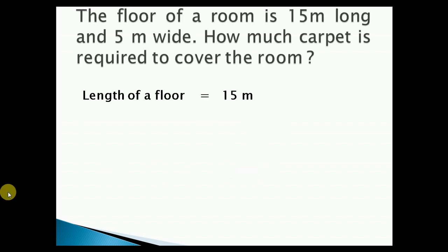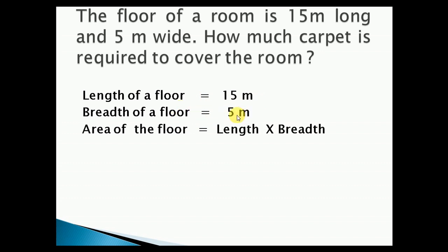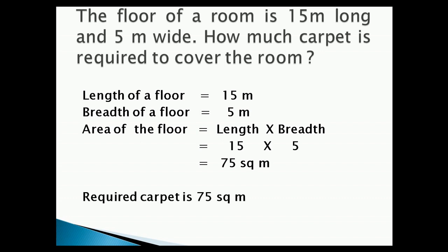Now we will solve problem sums on the basis of area and perimeter. The floor of a room is 15 meters long and 5 meters wide. How much carpet is required to cover the room? Length of the floor equals 15 meters, breadth equals 5 meters. Area of the floor equals length into breadth equals 15 into 5 equals 75 square meters. Therefore, the required carpet is 75 square meters.